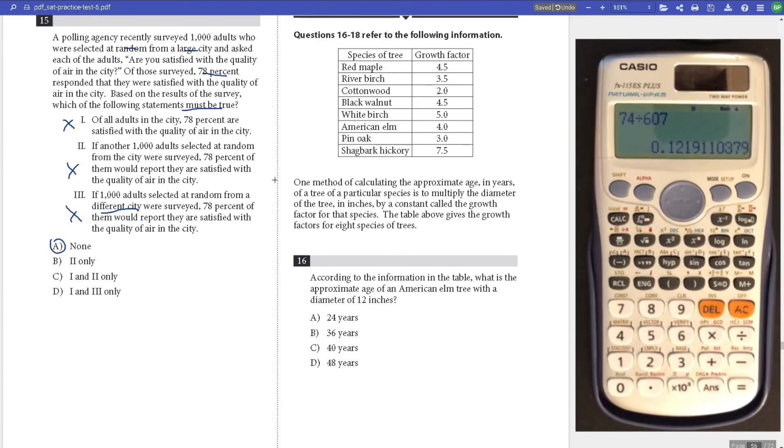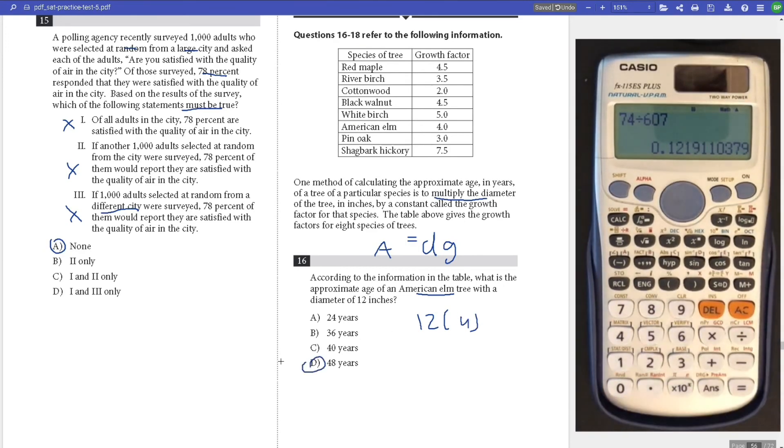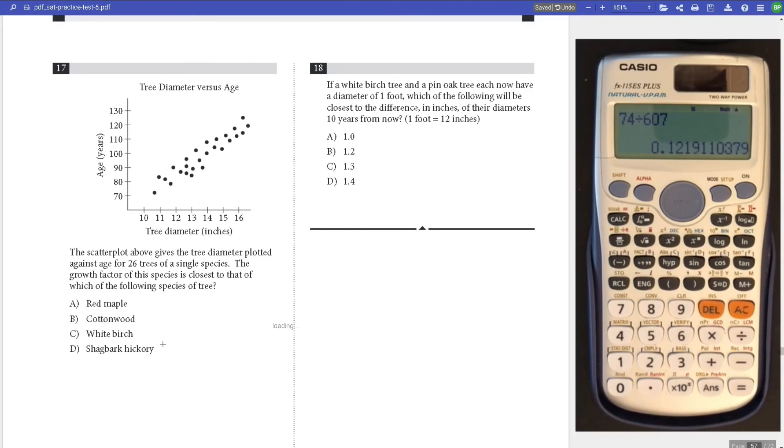Number 16, we're given this tree growth factors. One method of estimating age is to multiply the diameter by the constant called the growth constant. So we have an American elm tree, 12 for the diameter times the growth factor which is 4, we get 48D.